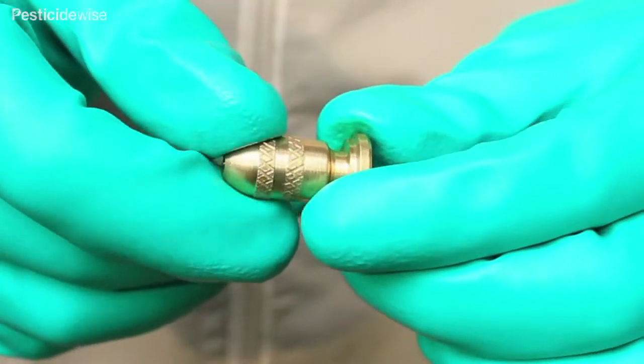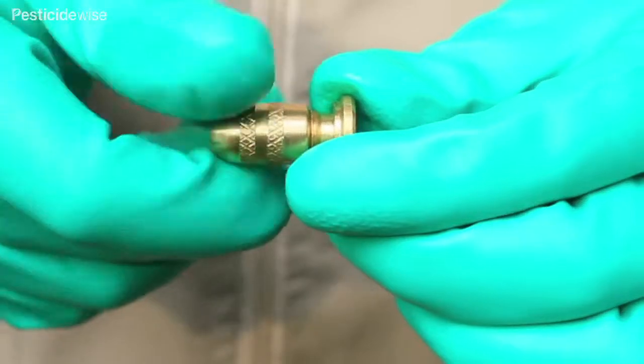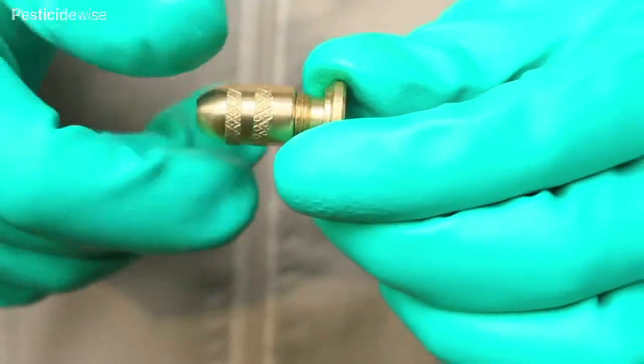Adjustable nozzles have two main components that are twisted to open or close the orifice from which the spray is emitted.